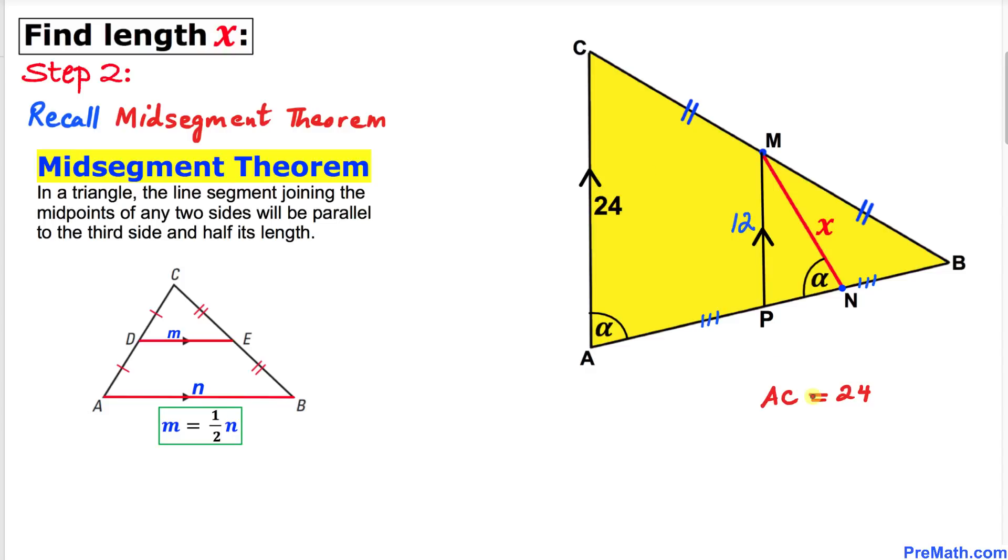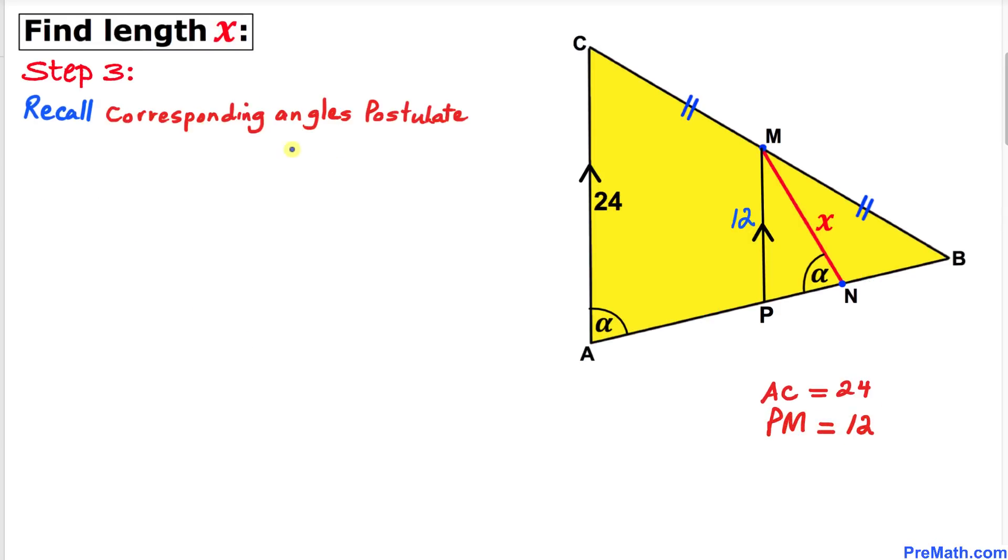If AC is 24 units, PM is going to be half of that, which is 12 units. Therefore, line segment PM is 12 units. Here's our next step.